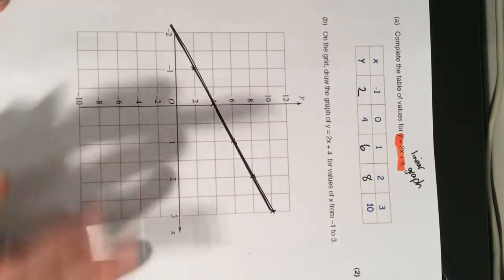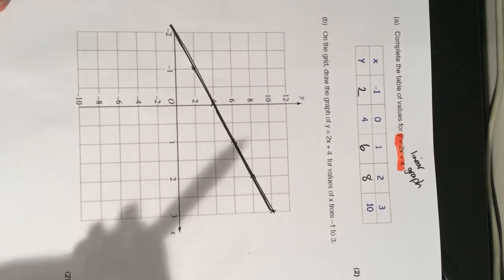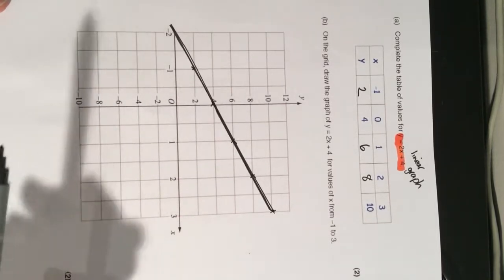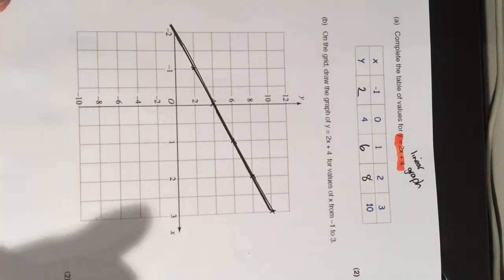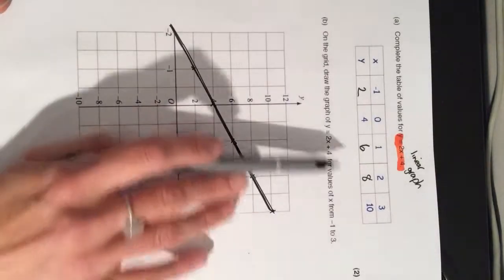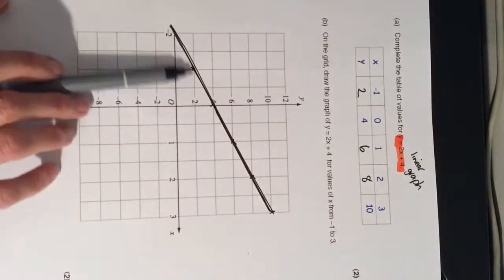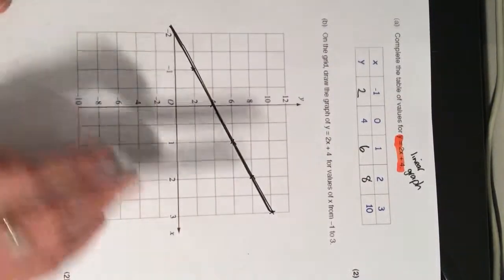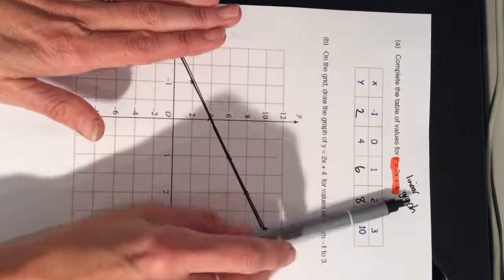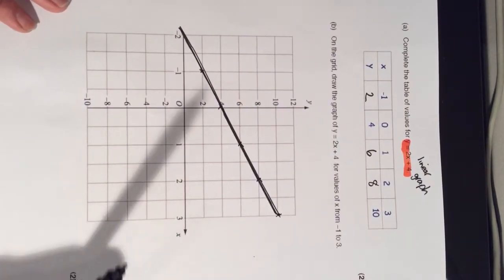If you fail to put in that straight line, you lose a mark straight away. Because you are drawing a linear graph. So, if you fail to draw a straight line, you are losing those marks. And if you don't draw the line for the values that it's wanting from minus 1 up to 3. Mine's going a little bit further, but that doesn't matter. I've gone from minus 1 up to 3. If you make it shorter, then again, you make the risk of losing marks as well.